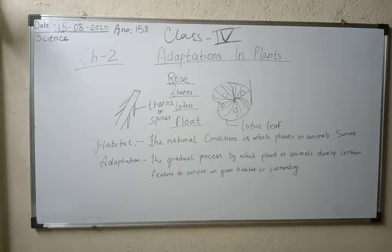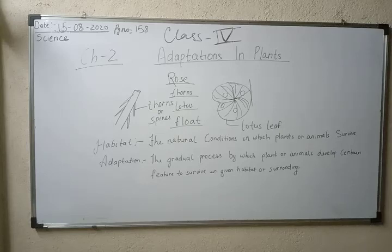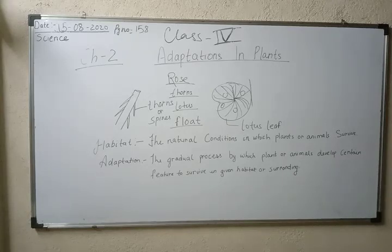These are known as the features that change in particular plants or animals. The gradual process by which plants or animals develop certain features to survive in a given habitat is called adaptation. We don't see all types of plants in all places. Rose plants and paddy crops cannot grow in desert land. Coconut trees and sugarcane cannot survive in a snowy region. These plants lack the characteristics required to survive in those areas — for example, rose plants and paddy crops require lots of water and cannot survive in a desert area.